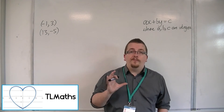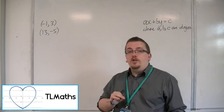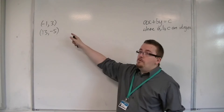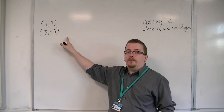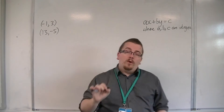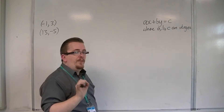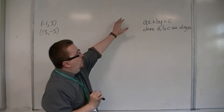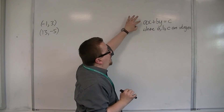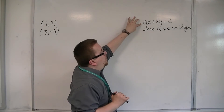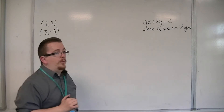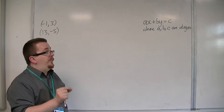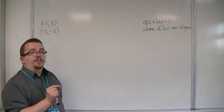Let's say we want to find the equation of a line that goes through these two points, but we want it in a specific format. We want it in the format ax plus by equals c, where a, b and c are integers.